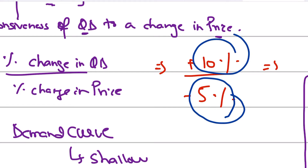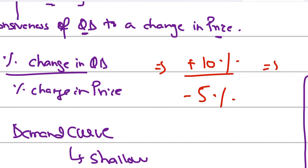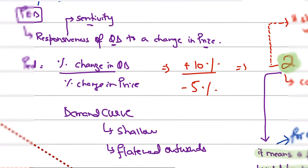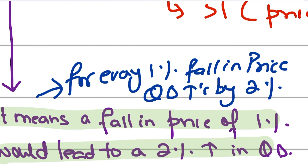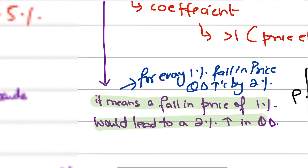This means that the quantity of clothes demanded in Farhan's retail outlet will increase by 10% — a 10% increase in demand for clothing in his store, meaning 10% more will be sold. For every 1% fall in price, the quantity demanded will increase by 2%. Every 1% fall in price means 2% more people will buy clothes in the shop.